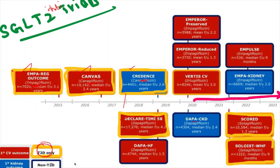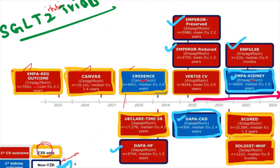As mentioned, CREDENCE, DAPA-CKD, and EMPA-KIDNEY are the primary renal outcome trials; the rest are primary cardiovascular outcome trials. Next, the important trials done in non-diabetic patients are the blue-marked ones: DAPA-CKD, DAPA-HF (DAPA heart failure), the EMPEROR trial, EMPA-KIDNEY, and some other less prominent trials. These trials were conducted in non-diabetic patients as well.